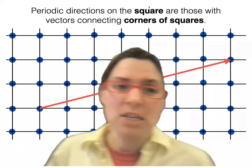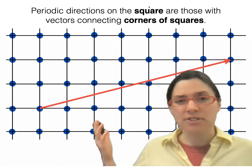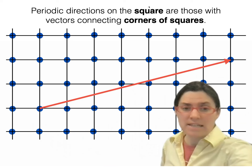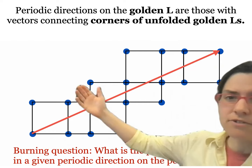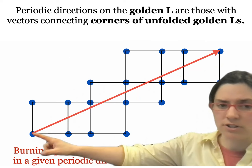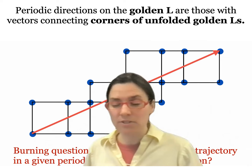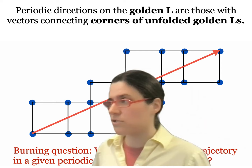Periodic directions on the square are those with vectors connecting corners of squares — rational directions. This generalizes nicely: periodic directions on the golden L are those with vectors connecting corners of unfolded golden Ls. You start at a corner, go across the surface adding new copies as needed, and eventually reach another vertex — that's a periodic direction. It turns out this is exactly things in the field Q adjoin √5. So anything in Q(√5) is periodic.